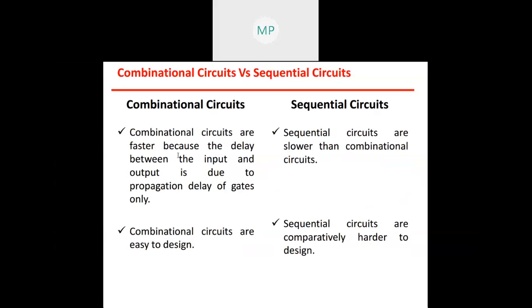Combinational circuits are faster because the delay between input and output is due to the propagation delay of gates only, while sequential circuits are slower than combinational circuits. Also, combinational circuits are easier to design, while sequential circuits are comparatively harder to design.